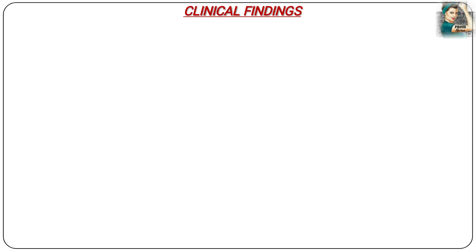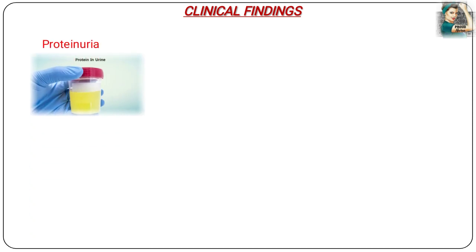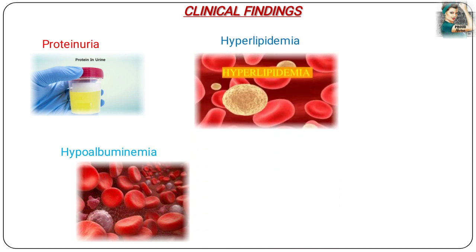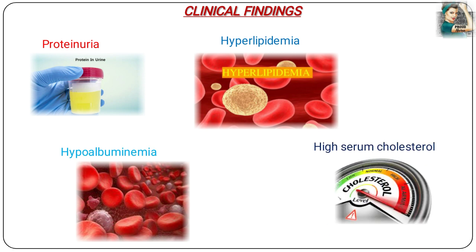Now moving towards the clinical findings. The first and most important clinical finding in nephrotic syndrome is proteinuria, that is the presence of proteins in the urine. Second is hypoalbuminemia, which is the low levels of albumin in the blood. Since albumin is a blood protein, and blood proteins are continuously lost from the blood in nephrotic syndrome, hypoalbuminemia results. The next is hyperlipidemia, which is the increased levels of lipids in the blood. Next is high serum cholesterol, which is the abnormally high levels of cholesterol in the blood.